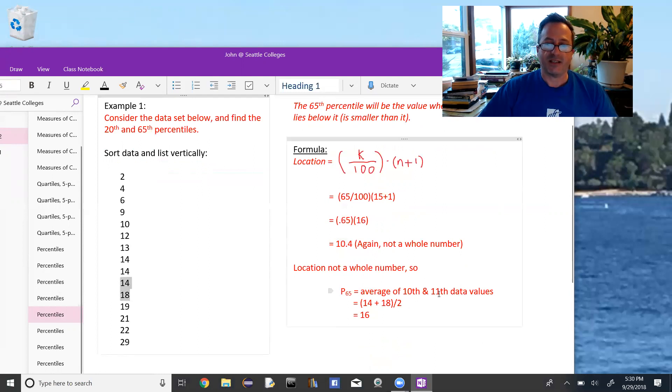So we take the average of the 10th and the 11th data values. 14 plus 18 divided by 2, and make sure you put those things on top in parentheses. You need to add those before you divide by 2. If I was just plugging this into a calculator, if I didn't have the parentheses, that'd be 14 plus 9, which would be 23, which would be too big. So 14 plus 18, 32 divided by 2 is 16. So the 65th percentile is 16.